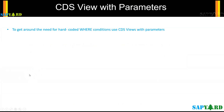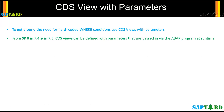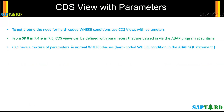Now let us come to CDS with parameters. What do parameters do? In layman's terms, parameters affect the signature of the CDS models. They represent scalar input values that must be supplied by the caller when performing data selection. You can evaluate parameter values in the logic of your CDS models to equip consumers with predefined control options for their data selections.